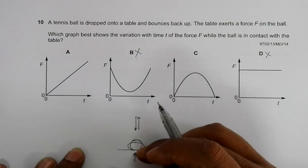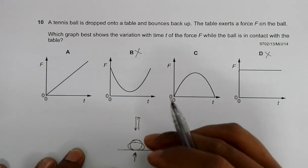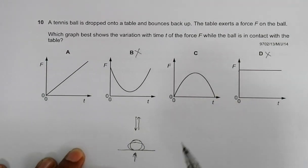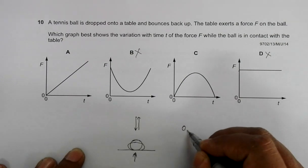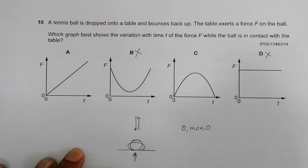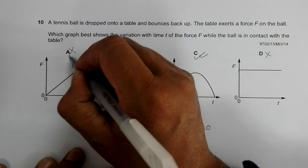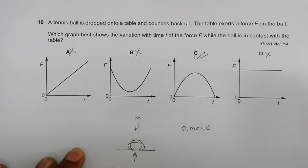The pattern is: initially force should be zero, then maximum, then zero again. This is reflected by choice C only. Choice A does not reflect that pattern, so the answer should be choice C.